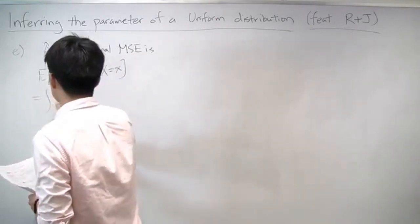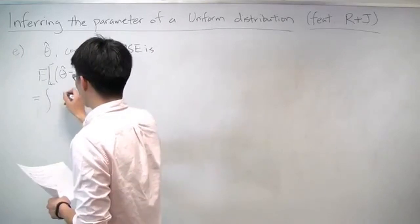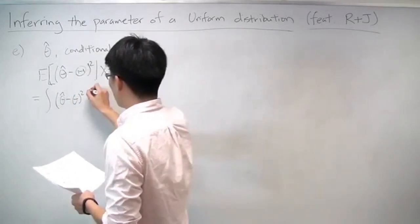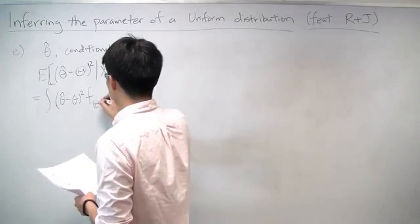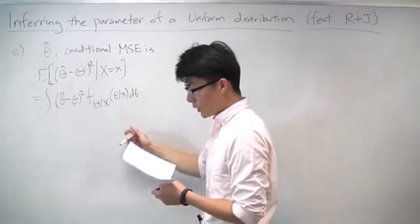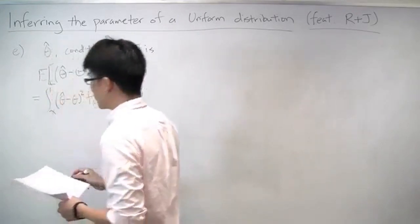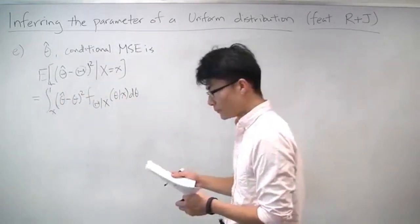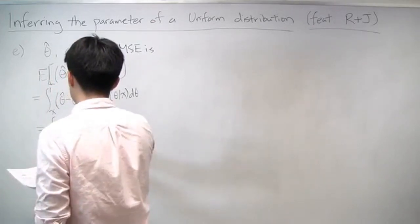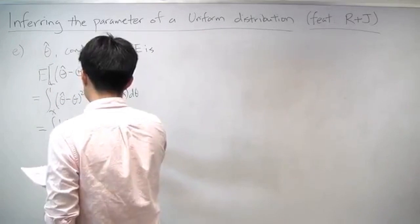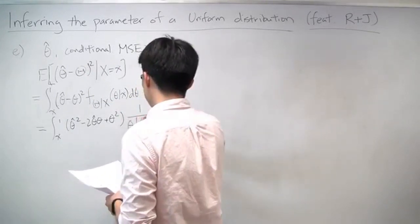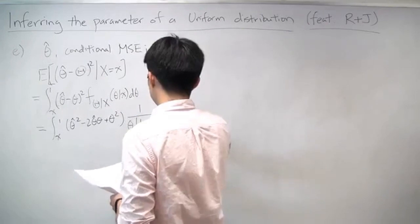To calculate this, we use our standard definition of conditional expectation. So it's the integral of (theta-hat minus theta) squared, weighted by the appropriate conditional PDF, which in this case would be the posterior. And we integrate this from theta equals x to theta equals 1. We can go through some algebra, and this gives us theta-hat squared minus 2*theta-hat*theta plus theta squared.